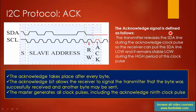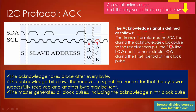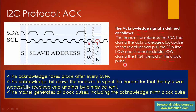The acknowledge signal is defined as follows: the transmitter releases the SDA line during the acknowledge clock pulse, so the receiver can pull the SDA line low, and it remains stable low during the high period of the clock pulse. During the ninth clock pulse, if the SDA line is zero it is accepted as ACK, and if the SDA line is high at that position it is considered NACK.